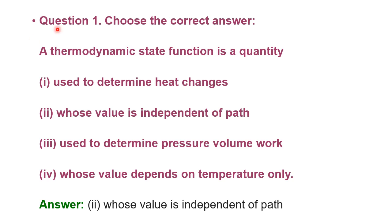Numerical number one — choose the correct answer. A thermodynamic state function is a quantity used to determine heat changes whose value is independent of path, used to determine pressure-volume work, whose value depends on temperature only. Recall our theory: a thermodynamic state function is a quantity whose value does not depend on its path — it depends upon the initial state and the final state. Therefore the correct choice is: independent of path — choice number two.